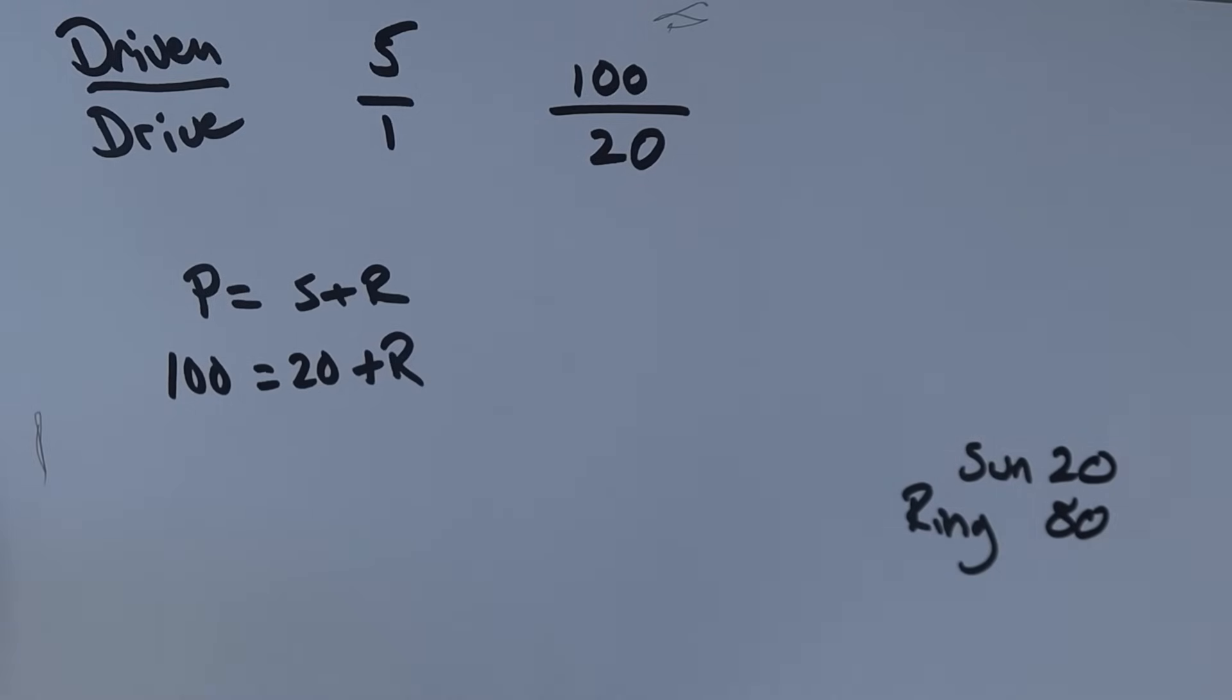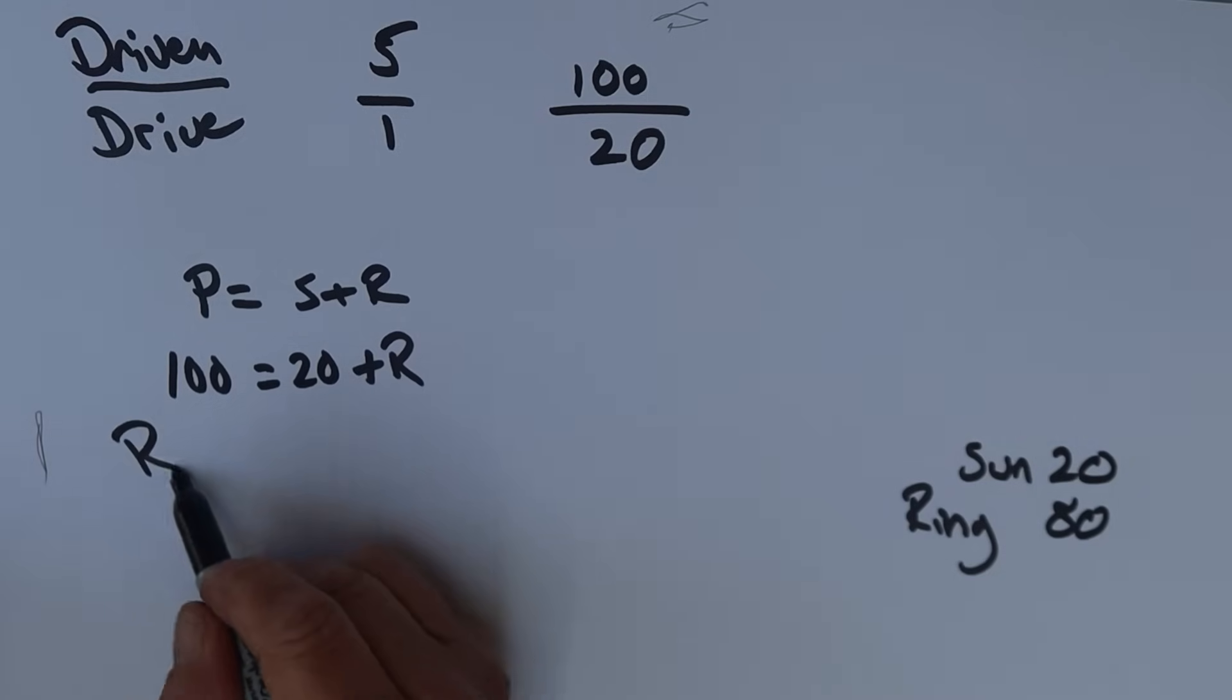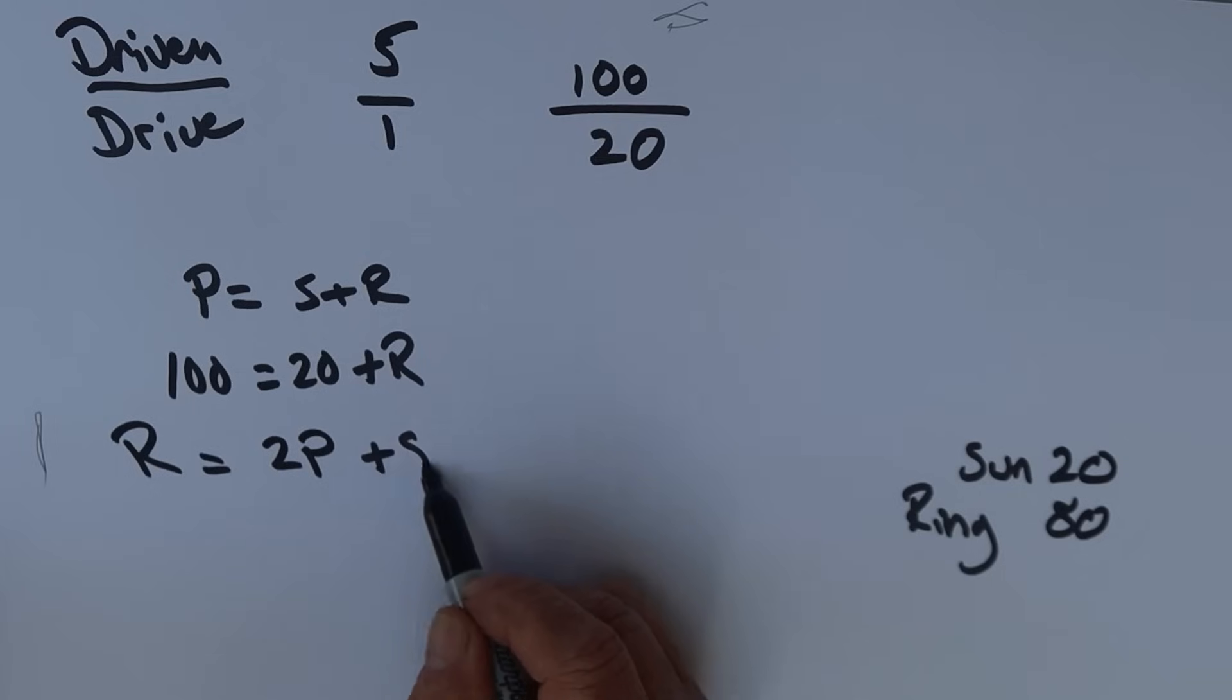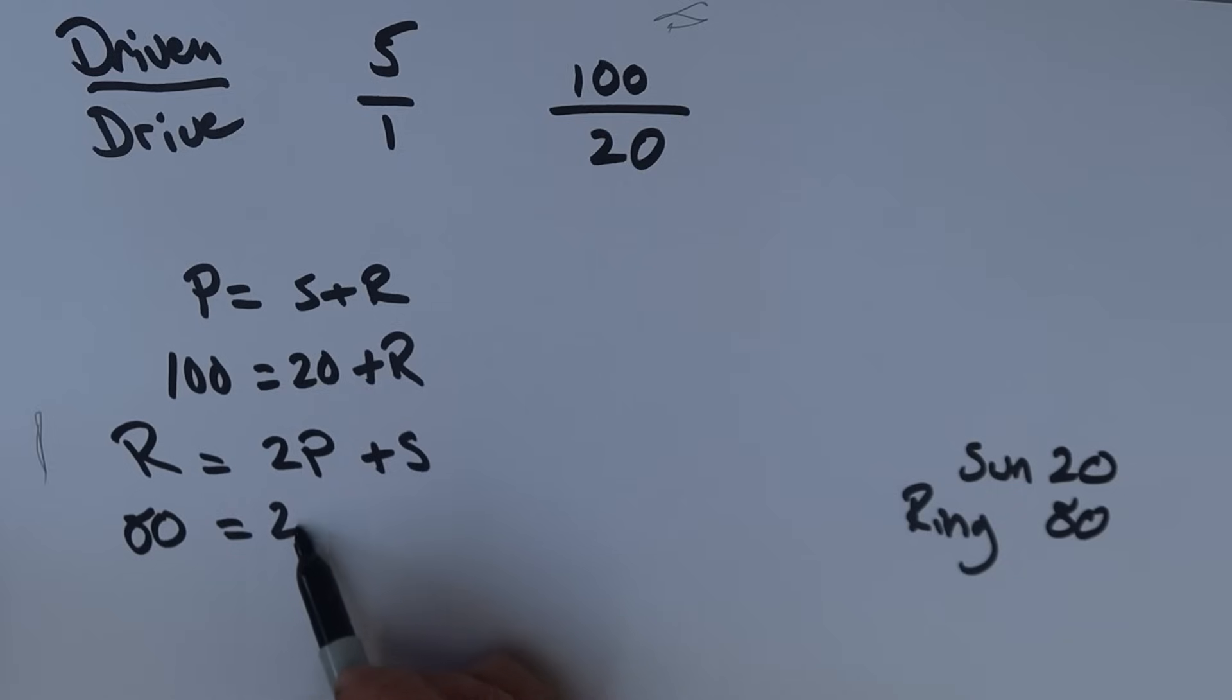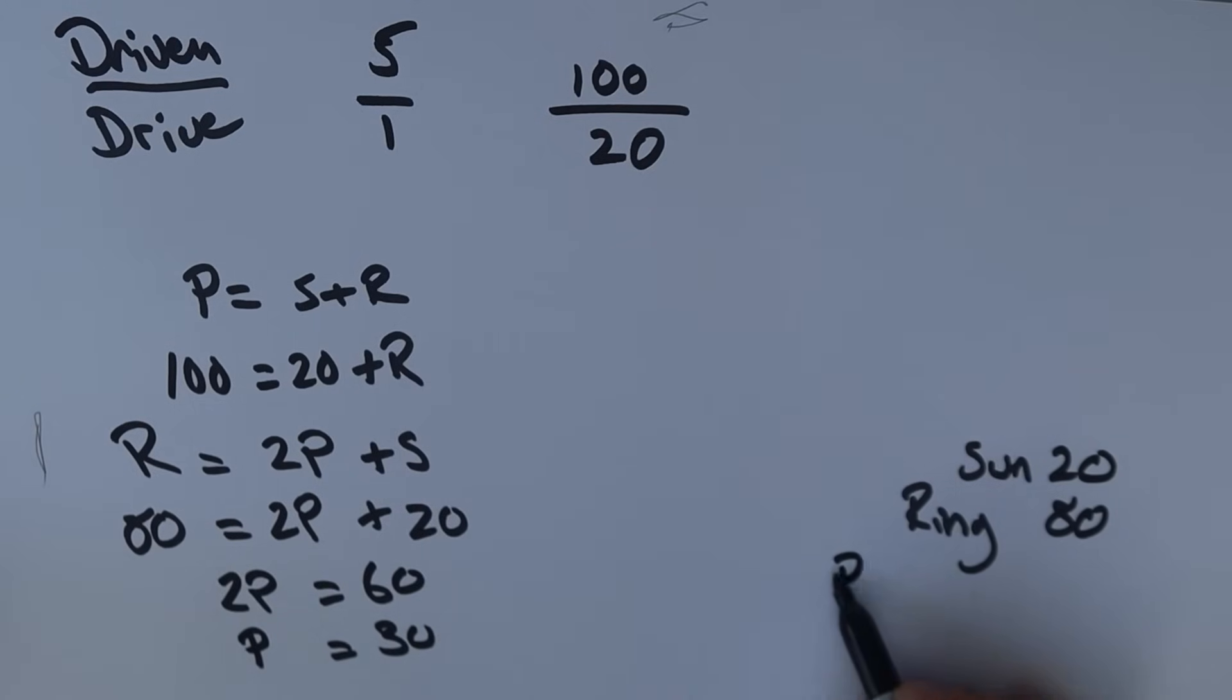Now, the next bit that we need is what size are the planets? And if you remember that formula I showed you earlier, where the ring is equal to 2 times the planet plus the sun. In this case, we now know what our ring is. It's 80. We don't know what the planets are. And we know that our sun is going to be 20, which means that 2 times the planets is going to be equal to 60. Or if you like, the planet is going to be 30. And so we have our final piece of information, which is the planet gear. And that's going to be 30. So these are the tooth sizes we're going to need to create a planetary gear system that will have a gear ratio of 5 to 1.